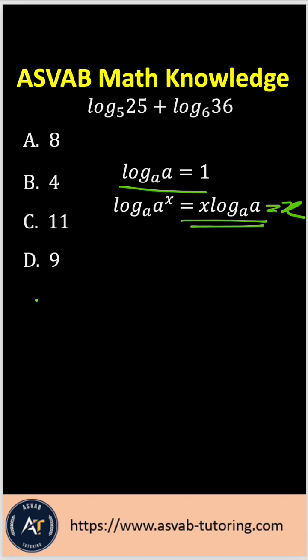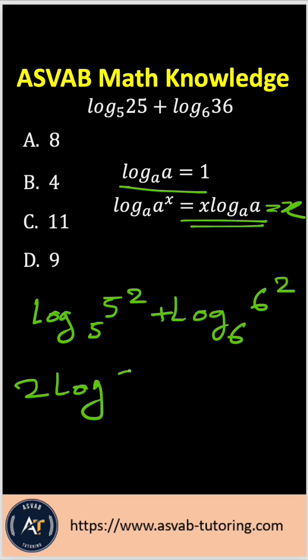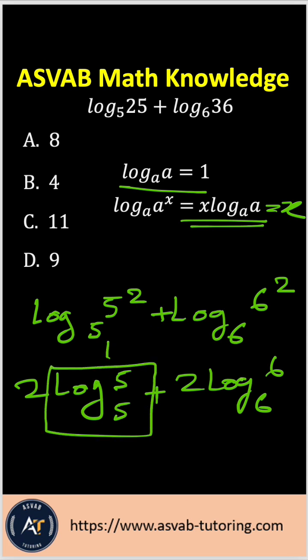You could write log base 5 of 5 squared plus log base 6 of 6 squared. You could bring the 2 to the front, so you have 2 log base 5 of 5 plus 2 log base 6 of 6. Now you know this part equals 1 and that part equals 1. So 2 times 1 is 2, plus 2 equals 4.